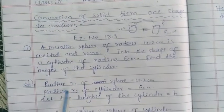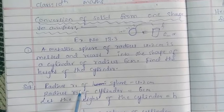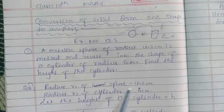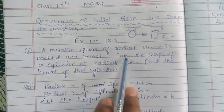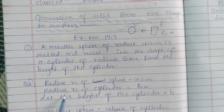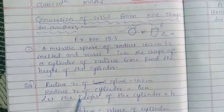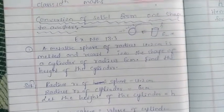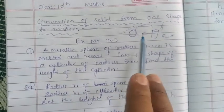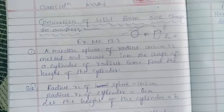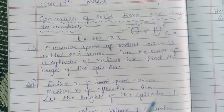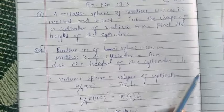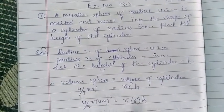First, write the given values. Radius of sphere: r1 = 4.2 cm. Radius of cylinder: r2 = 6 cm. Let the height of the cylinder equal h. Now you can conclude from the question that volume of sphere equals volume of cylinder.